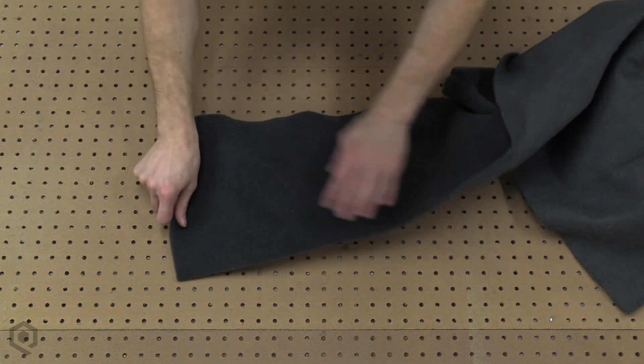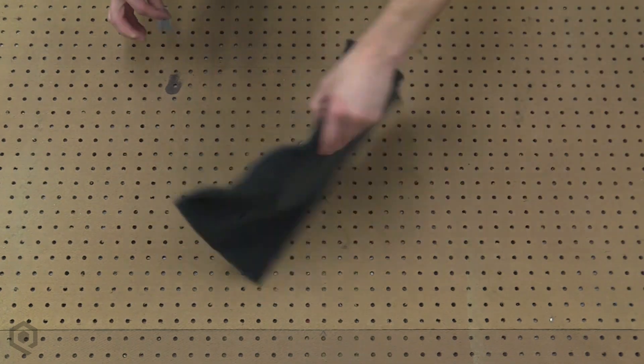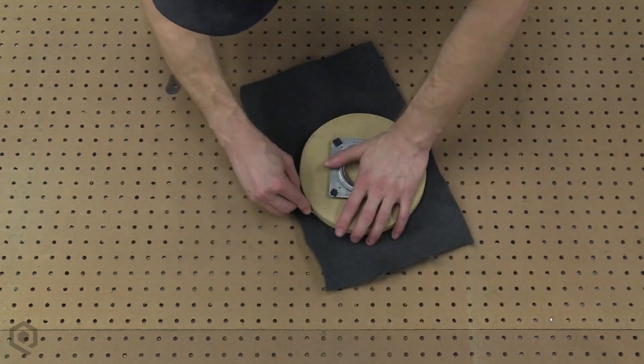Next, grab your box carpet or whatever you'd like to cover the top of the turntable with and lay it down on the glue. Once the glue is dry, flip it over and trim away any excess.